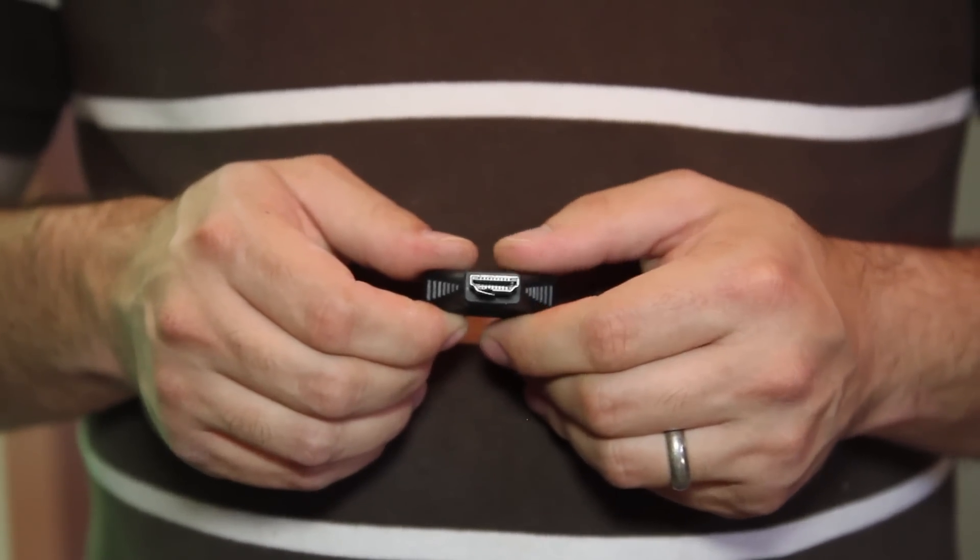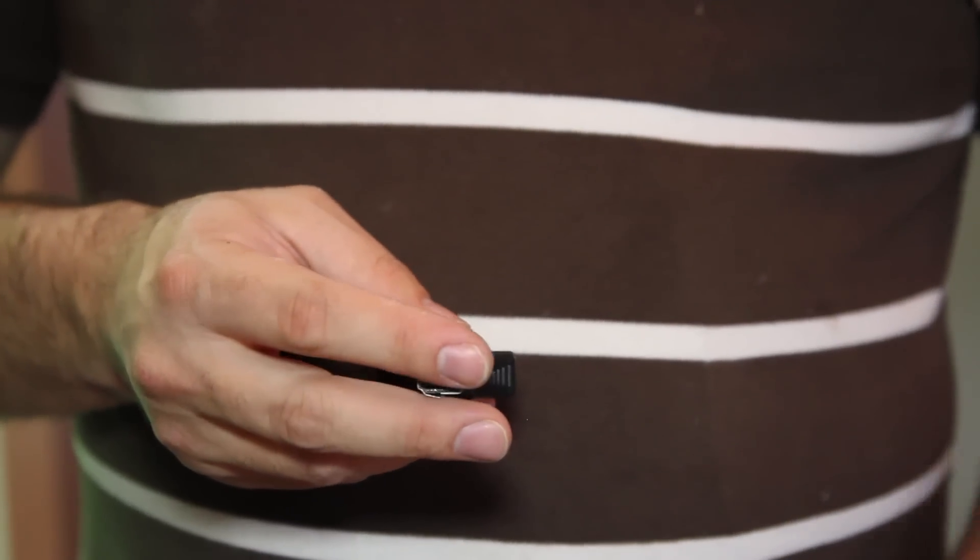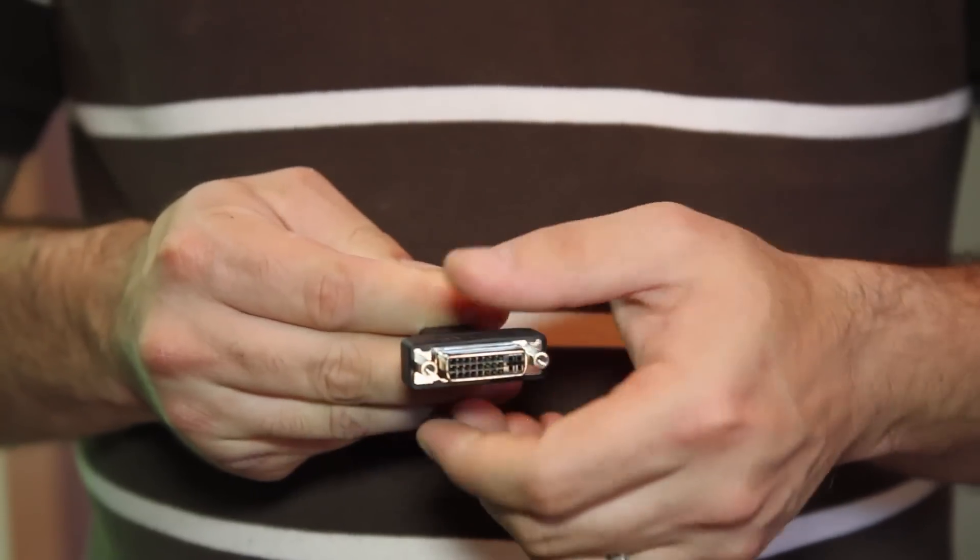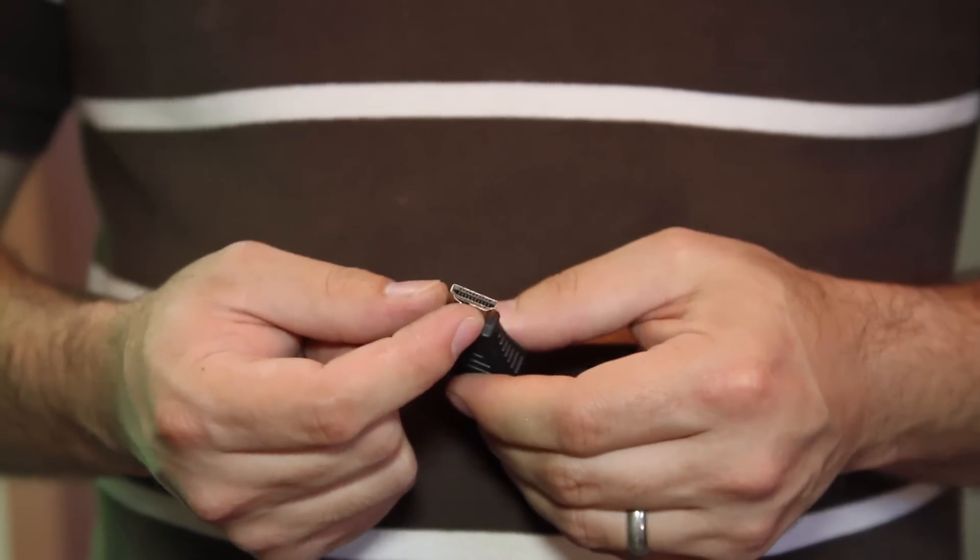It's very common for these connectors to become bent because when they're inserted into your device, if you push or tug in any direction, it will bend and cause this male end of the connector to warp.